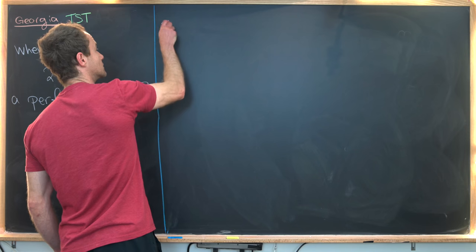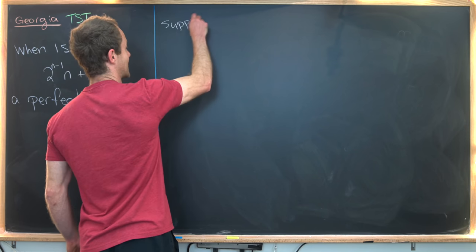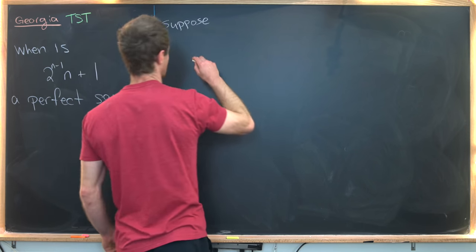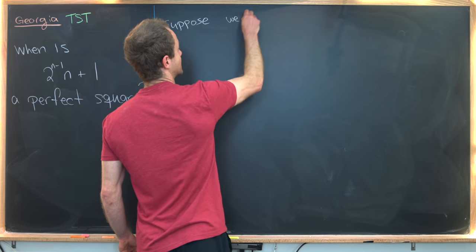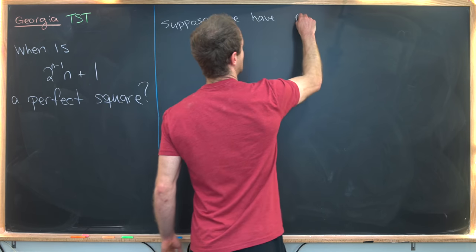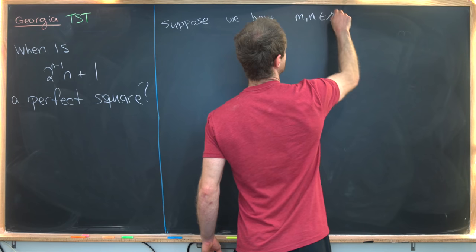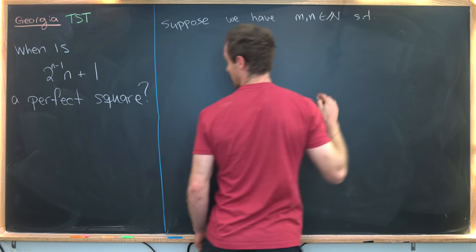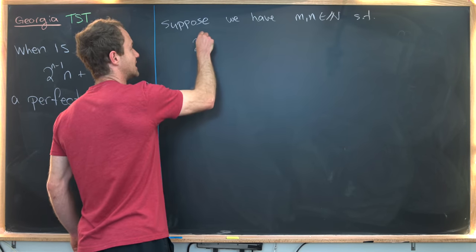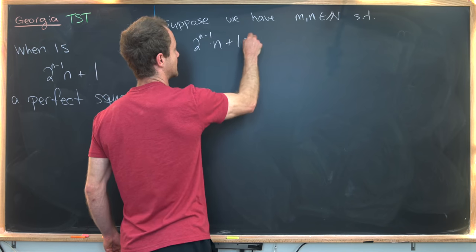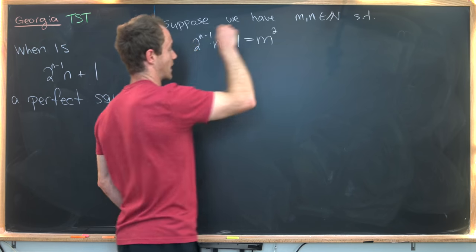Let's suppose we have a setup where this is a perfect square. So that means we have m and n, which are natural numbers, satisfying 2^(n-1) × (n+1) = m².